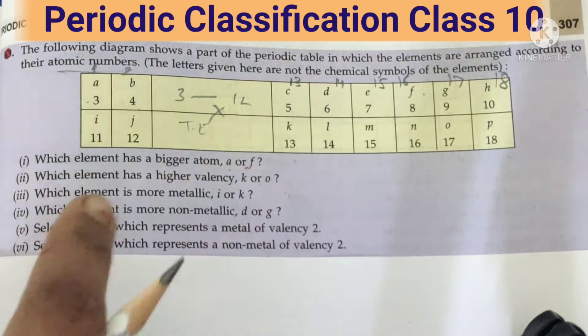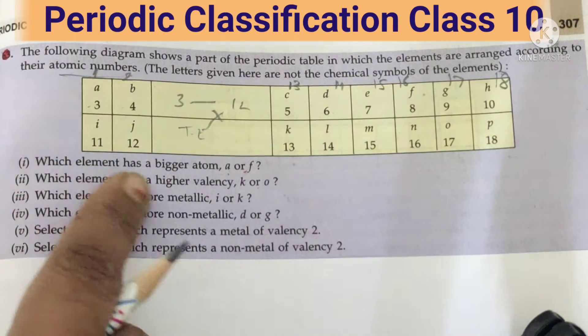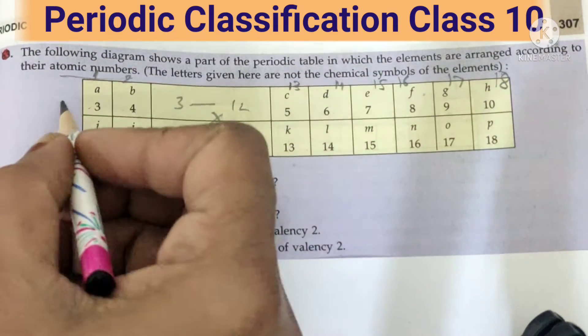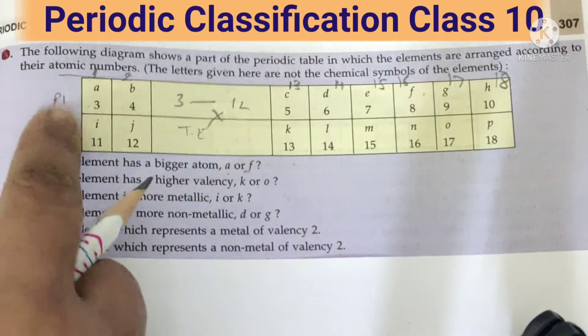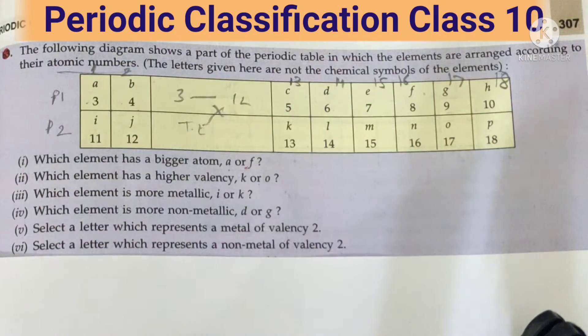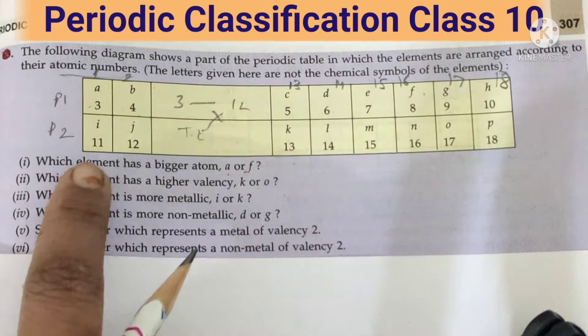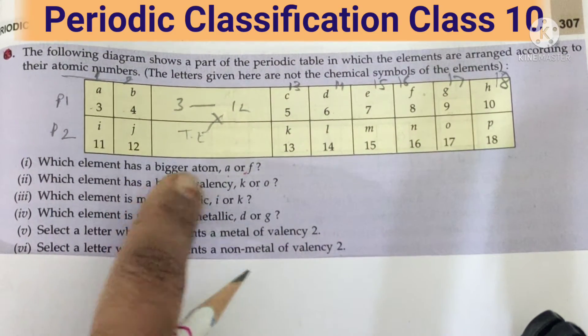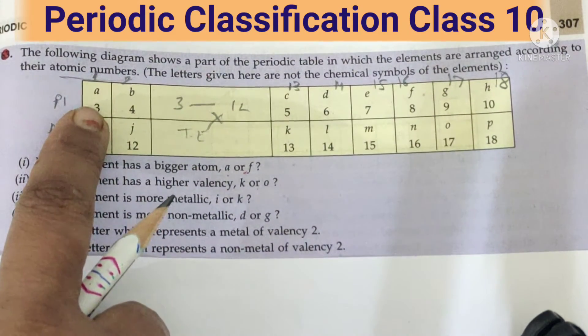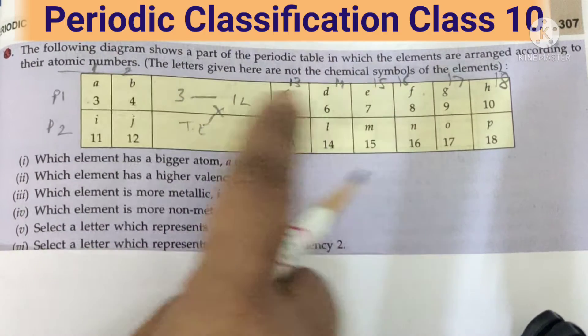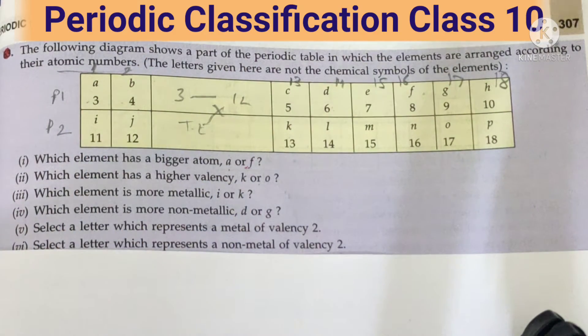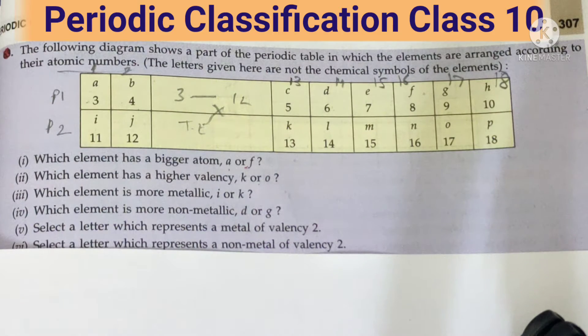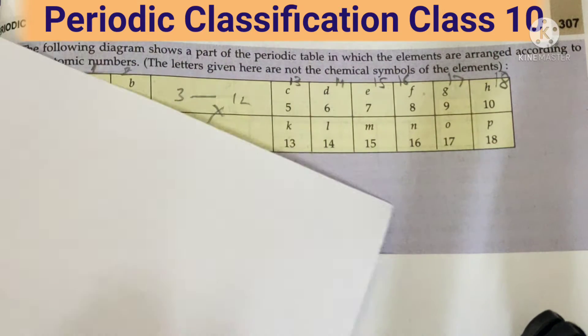Come to the next one. Which element has larger atom? So this is period number 1, this is period number 2. So two periods are given and all the groups are given. Now first one: which element has bigger atom, A or S? That means they all belong to one period. So what we have learned?